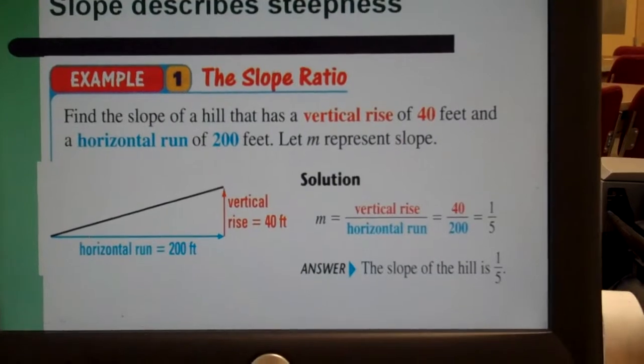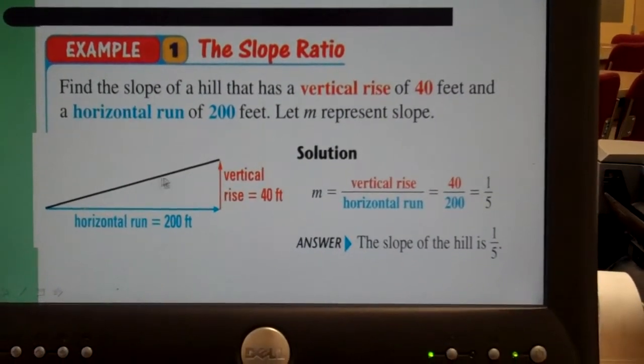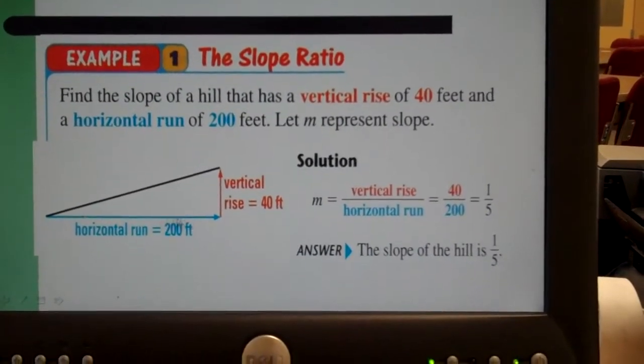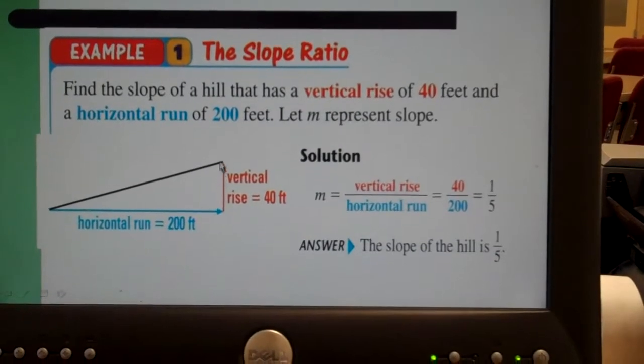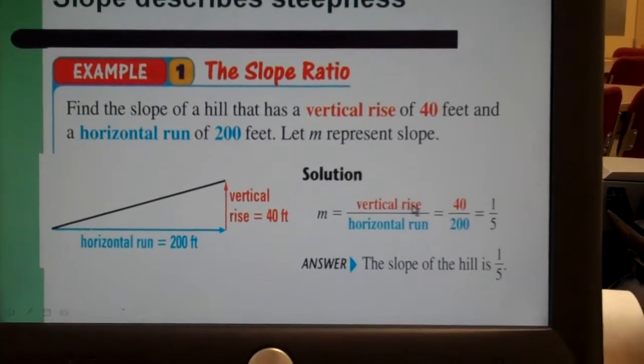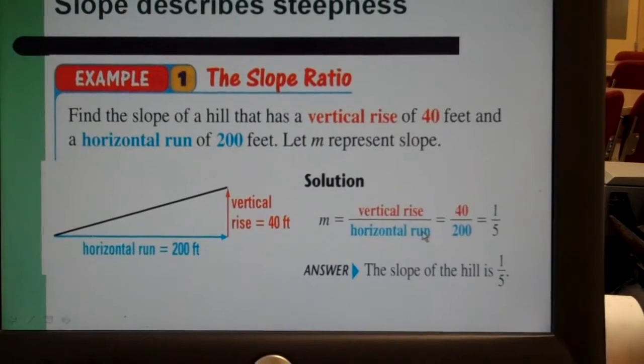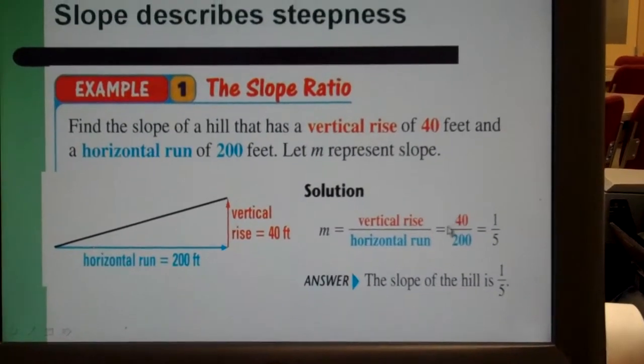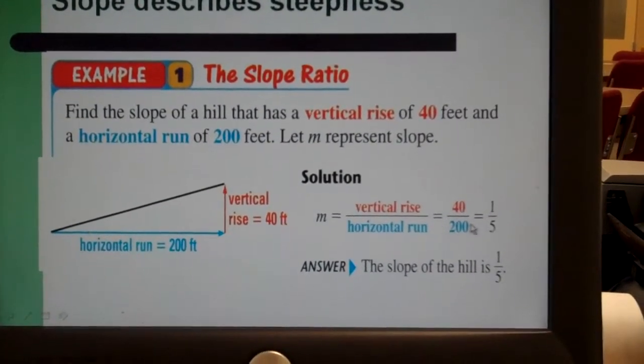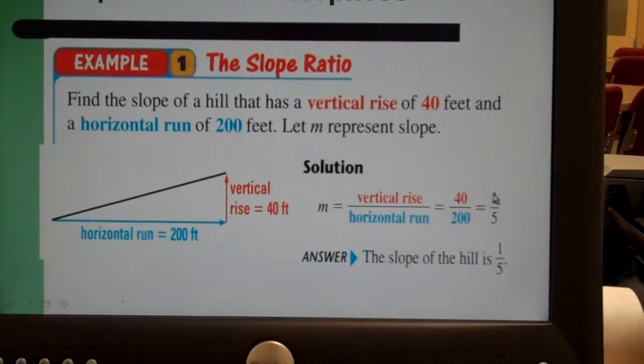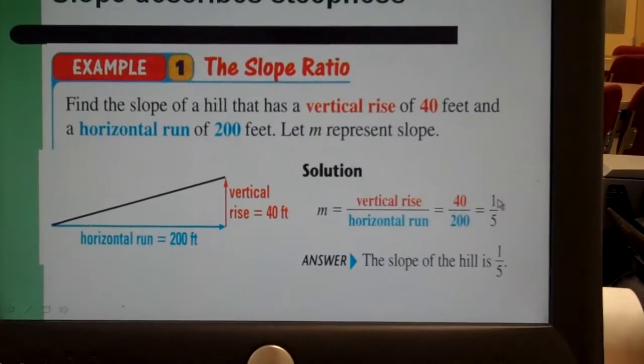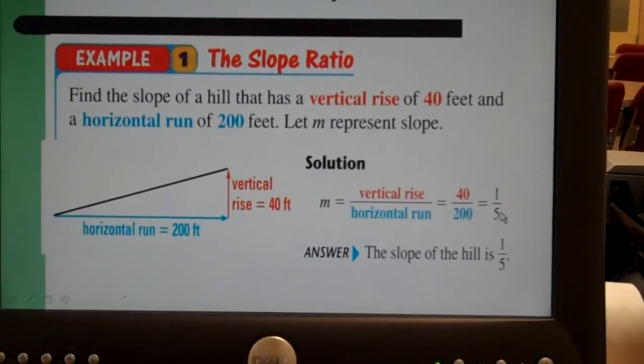Another example, if we had this hill, as we go over 200 feet, it rises 40 feet. We put that vertical rise over the horizontal run. That would be 40 over 200. And we just simplify that fraction. And we find our slope ratio is one over five.